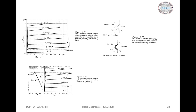The common emitter current gain characteristics are a plot of output current IC versus input current IB for various fixed levels of VCE. Like the common base current gain characteristics, they can be obtained experimentally or derived from the output characteristics. To prepare the table of IB and IC values experimentally, VCE is held at a selected level, IB is adjusted in steps, and the corresponding IC level is recorded at each step.